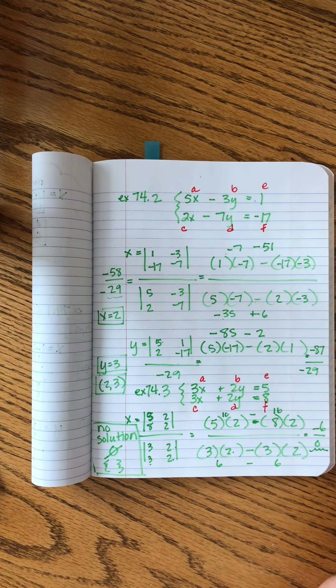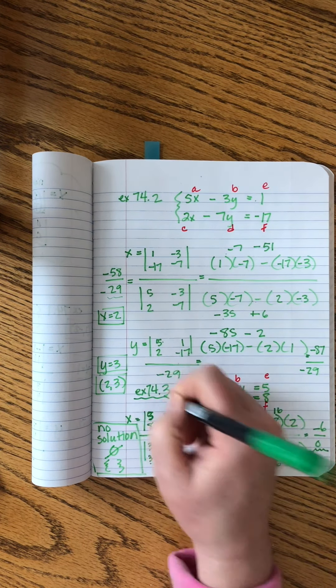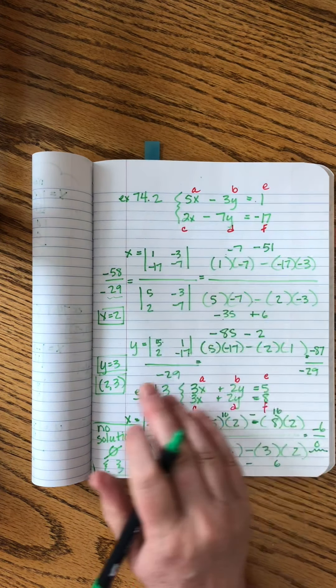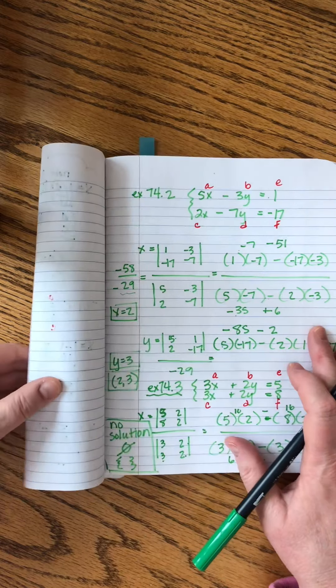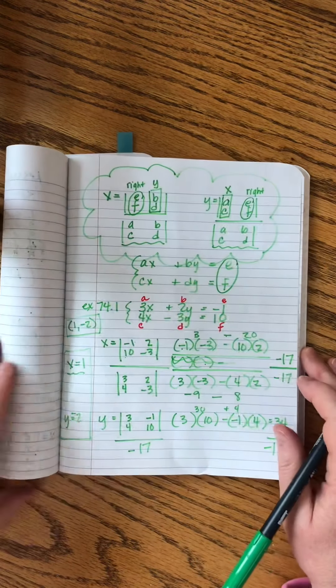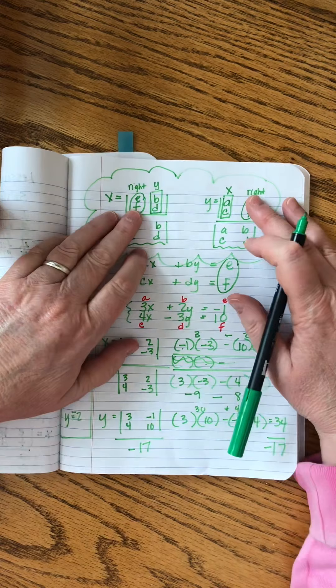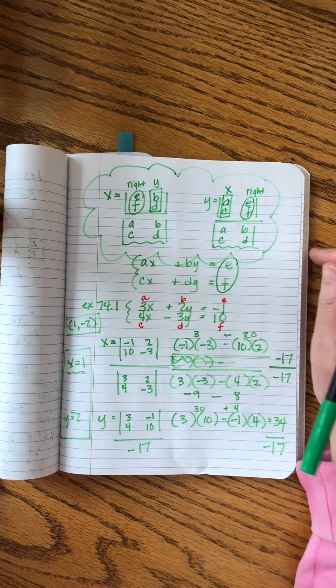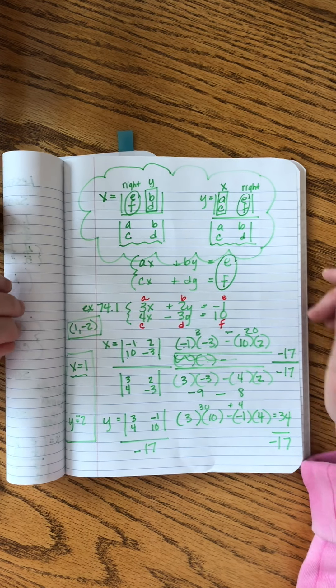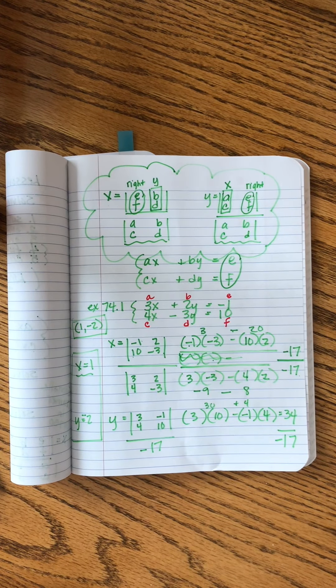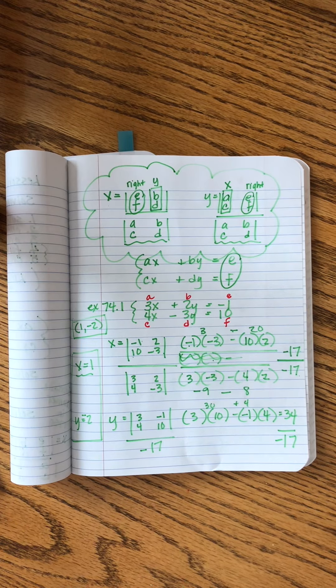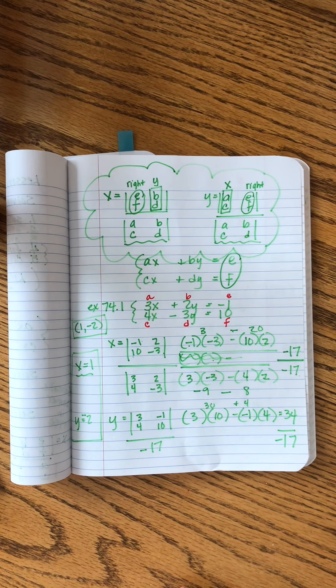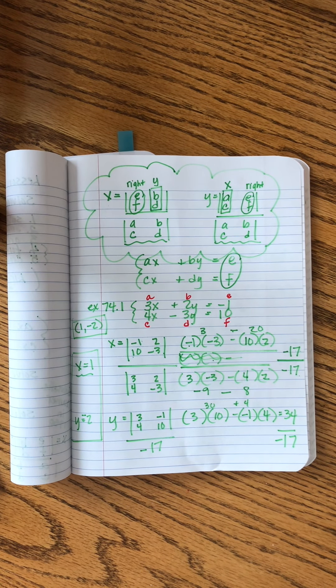So that is the special case, example 74.3. But now, you know, a fifth way to solve systems of equations. And that is using the beautiful formulas of our friend, Gabriel Kramer, 1750, a Swiss mathematician who was fascinated with matrices and linear algebra. Don't you feel smart? What a piece of information you now have in your head. Lesson 74 is complete. Good job.